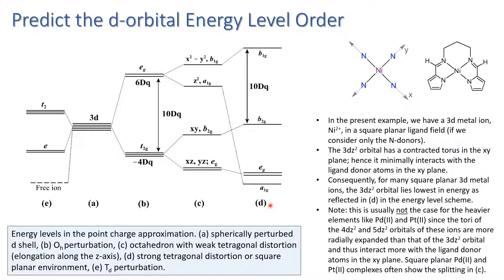When we get to the limit of a square planar geometry for a 3d metal ion, where the 3dz² orbital is not particularly diffuse, the interaction with the donor atoms in the xy plane tends to be very small. This means the dz² orbital lies lowest in energy. Just draw your attention to the fact that if it's palladium 2 or platinum 2, these are also square planar d8 ions. The more diffuse 4dz² orbital and 5dz² orbital mean that there's a much greater interaction with your ligand donors in the xy plane. But for the purpose of our discussion, we're dealing with nickel 2, a 3dz² orbital which is going to be the lowest in energy.